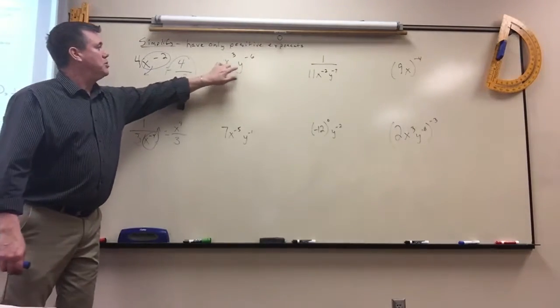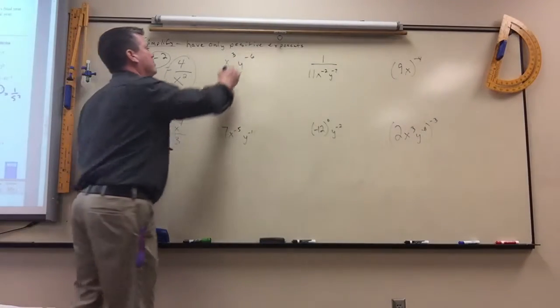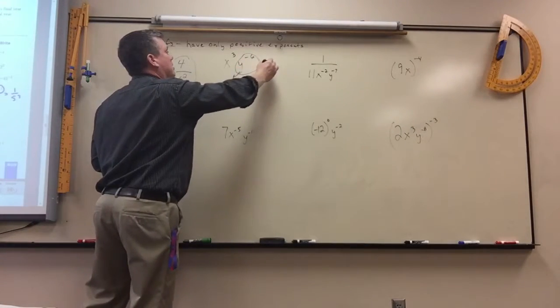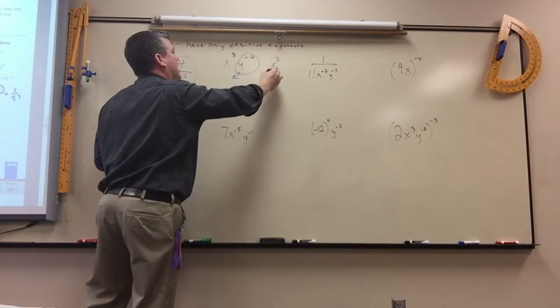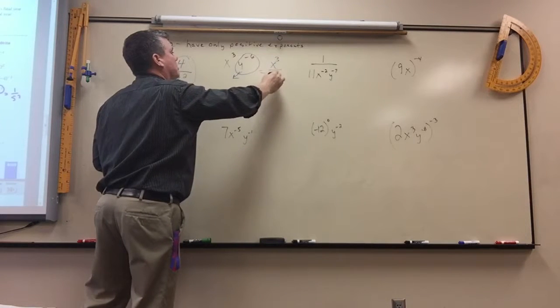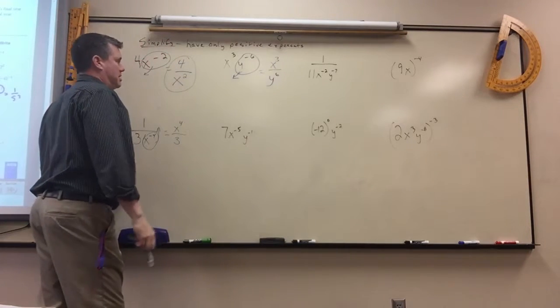Here, there are two things. This one is negative, so you would just put it underneath. The x cubed stays on top, the y moves to the bottom, and it changes to positive 6.